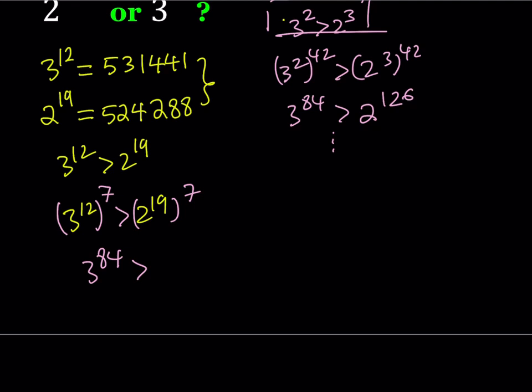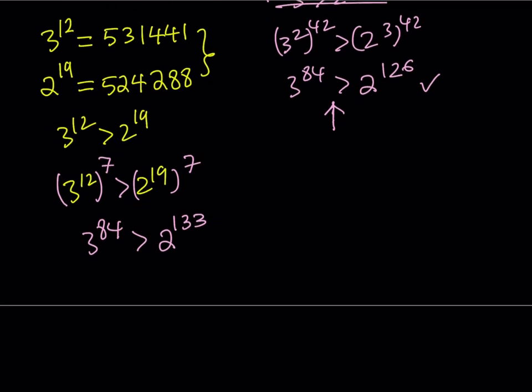And this is going to give us 3 to the power 84 is greater than 19 times 7 is going to be 133. All right, great. So 2 to the power 133. Obviously 3 to the power 84 is greater than 2 to the power 126. We knew that. But we didn't know if this is still going to be greater than any larger power of 2. Obviously, even if you make the power of 2 really large here, the 3 is still going to be greater than that. Because the difference is huge when you look at this equation. That's why this is not a very efficient approach. So you have to make the inequality better.